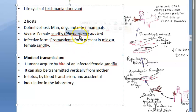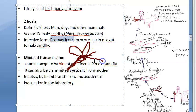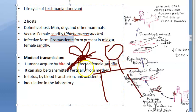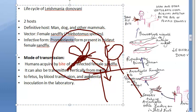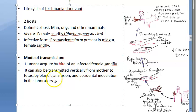Phlebotomus, sandfly, and promastigote go together. The female sandfly has promastigotes in its midgut. When an infected female sandfly bites a human, the promastigotes are transmitted — either by regurgitation from the midgut or directly discharged from the proboscis. The mode of transmission is primarily the bite of an infected female sandfly. It can also be transmitted vertically from mother to fetus, and by blood transfusion or accidental inoculation in the lab.